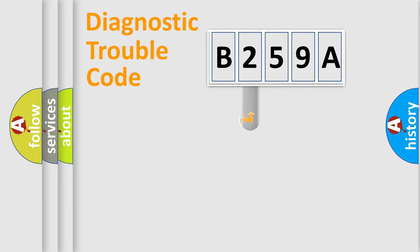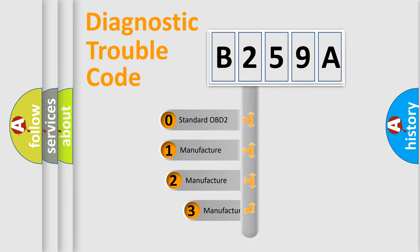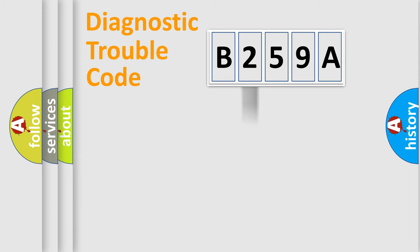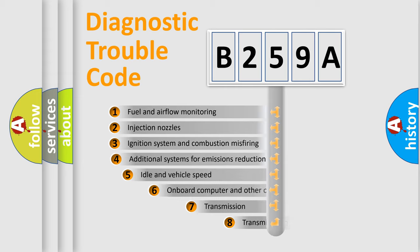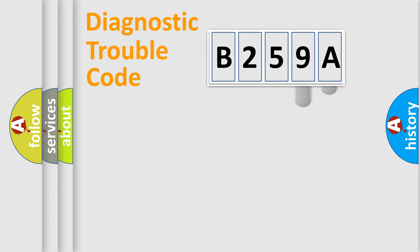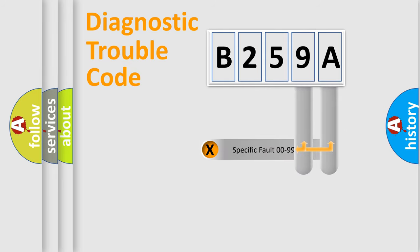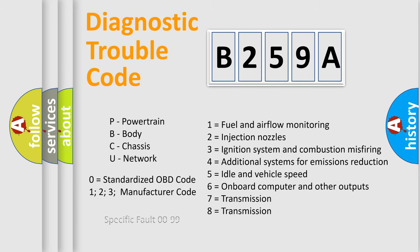This distribution is defined in the first character of the code. If the second character is expressed as zero, it is a standardized error. In the case of numbers 1, 2, or 3, it is a manufacturer-specific error expression. The third character specifies a subset of errors. This division is valid only for the standardized DTC code, where the last two characters define the specific fault of the group.